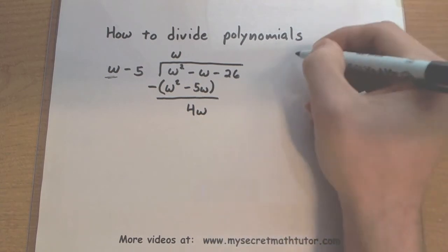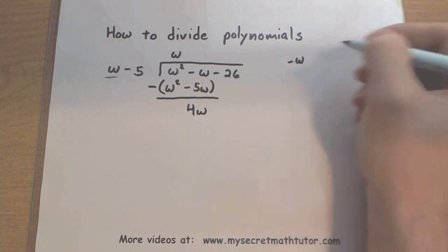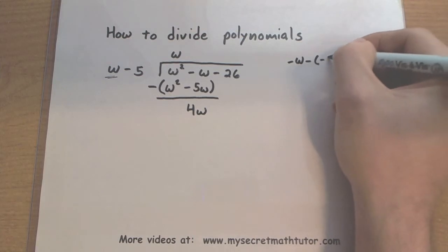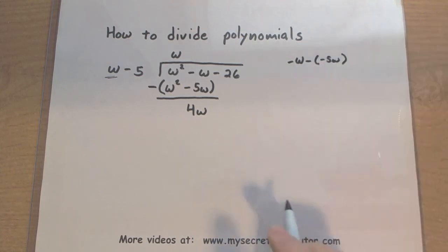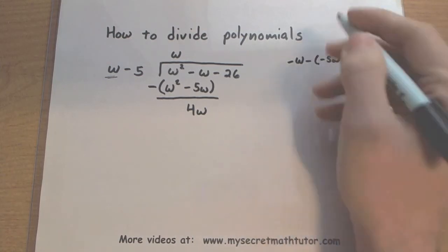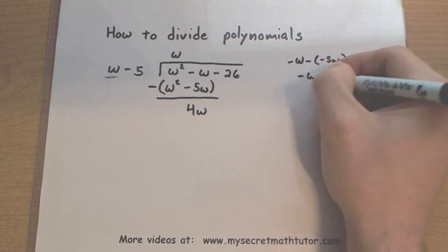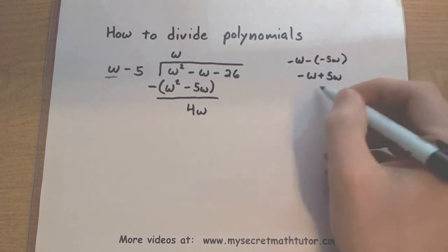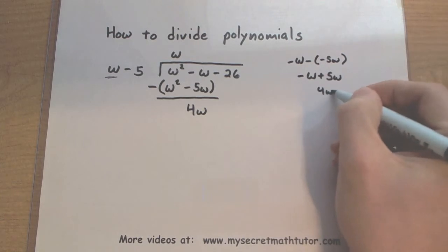To see why, let's go over here on some scratch. So I have minus w and I'm subtracting a minus 5w. When you see two negative signs together like that, that's like saying minus w plus 5w. And you see, there's where I get my positive 4w.